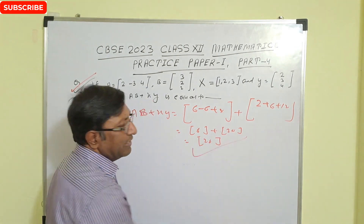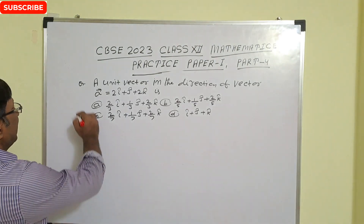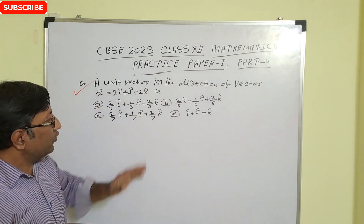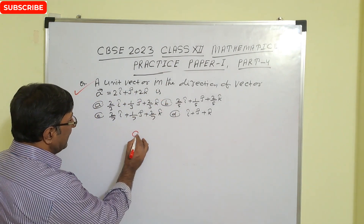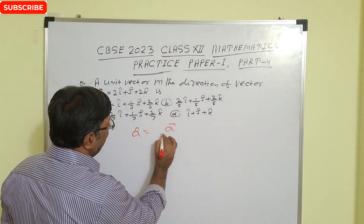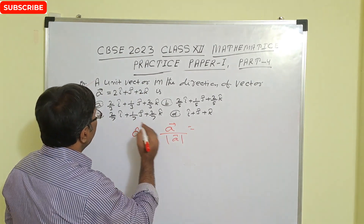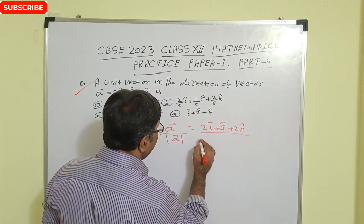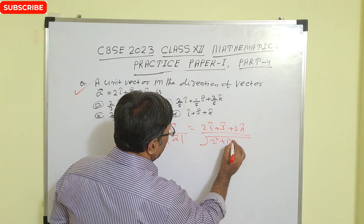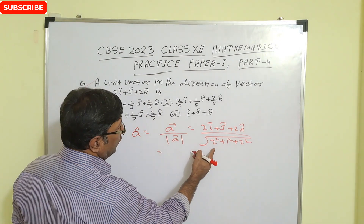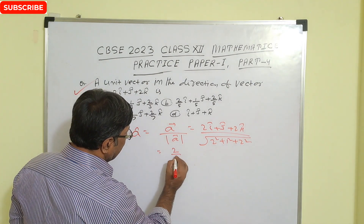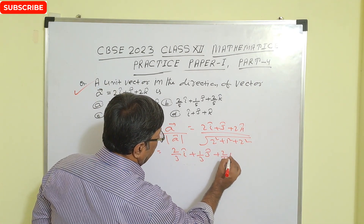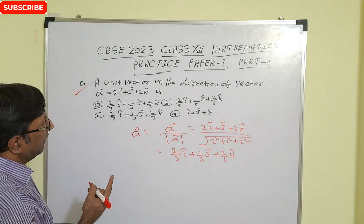Next question: find a unit vector in the direction of vector a = 2i + j + 2k. The unit vector â = a vector divided by magnitude of a vector. The magnitude is √(2² + 1² + 2²) = √(4 + 1 + 4) = √9 = 3. So the correct answer is (2/3)i + (1/3)j + (2/3)k.